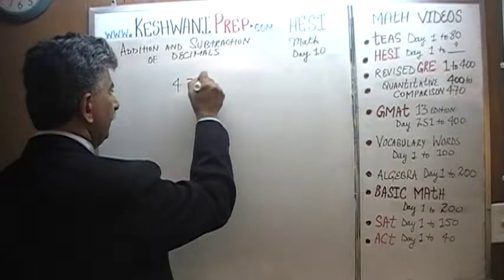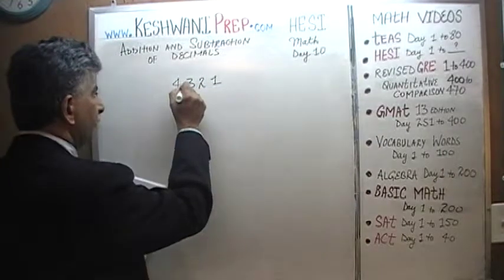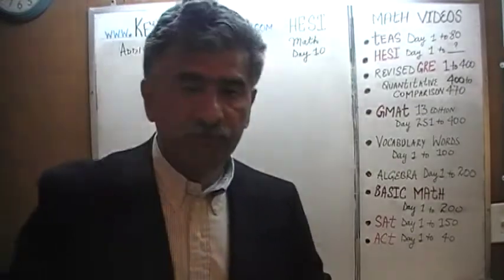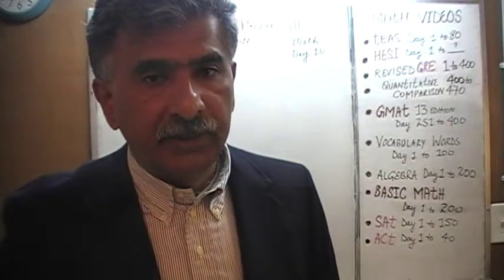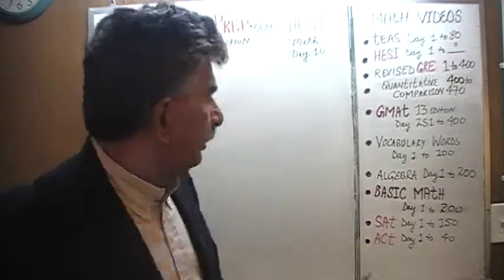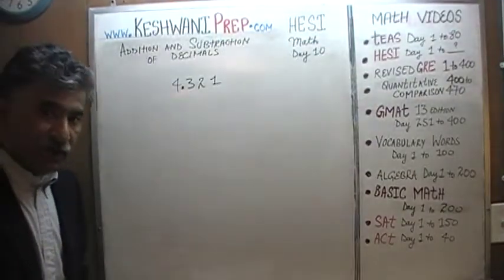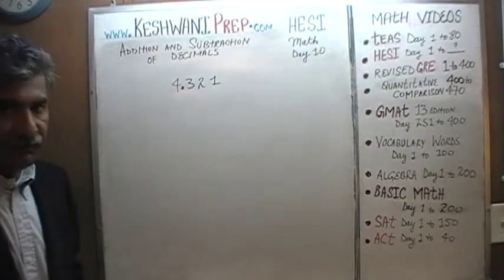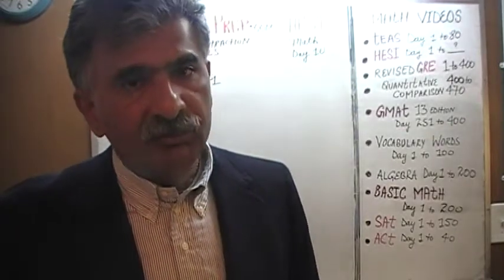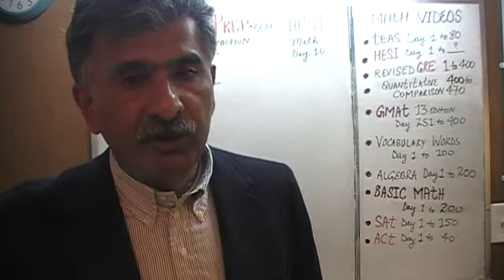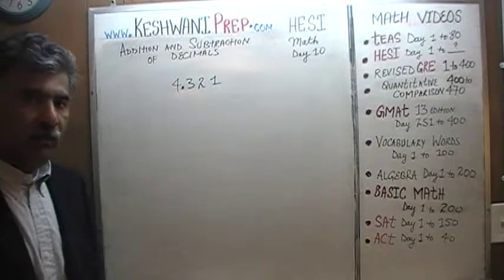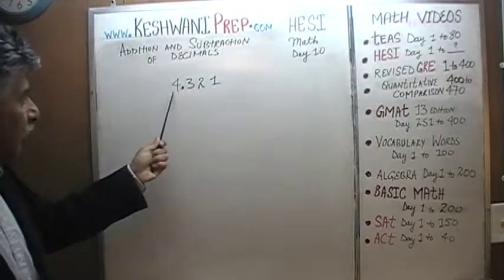For example, if we are given something like 4.321, the very first thing I want to emphasize is that a lot of the time people end up misreading it. You must know how decimals are to be read. A quantity such as this one is not to be read as 'four point three twenty-one.' The proper way to read decimals is to read every single digit individually. Anything that comes after the decimal point to the right has to be read individually. So this is to be read as 4.321.